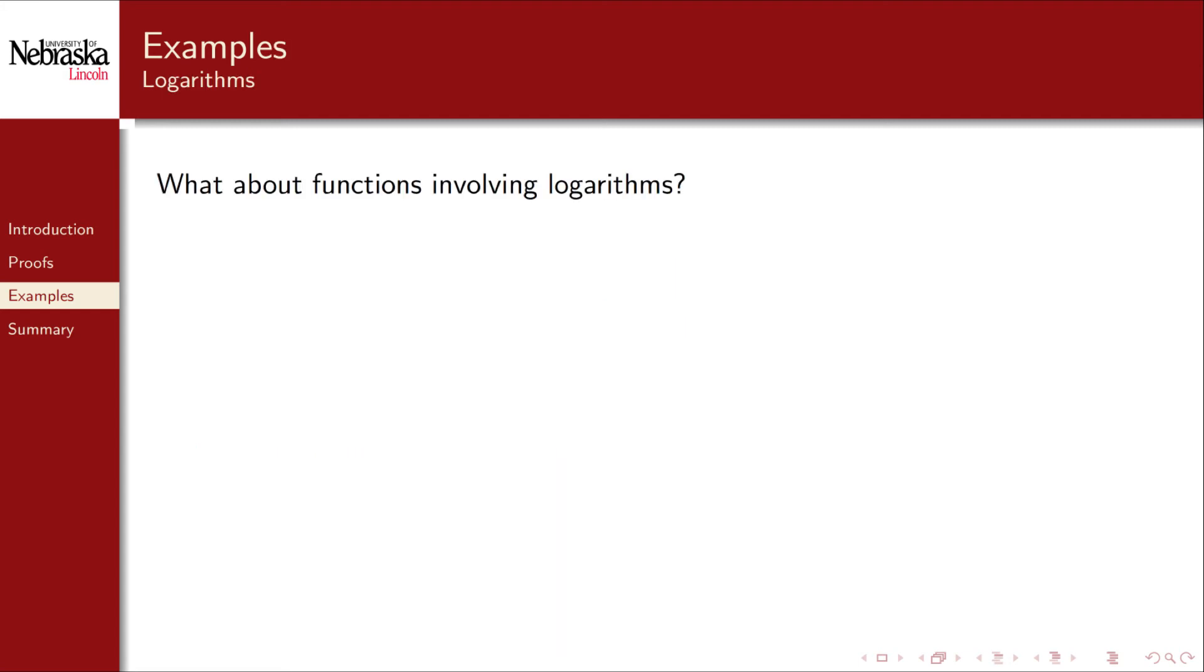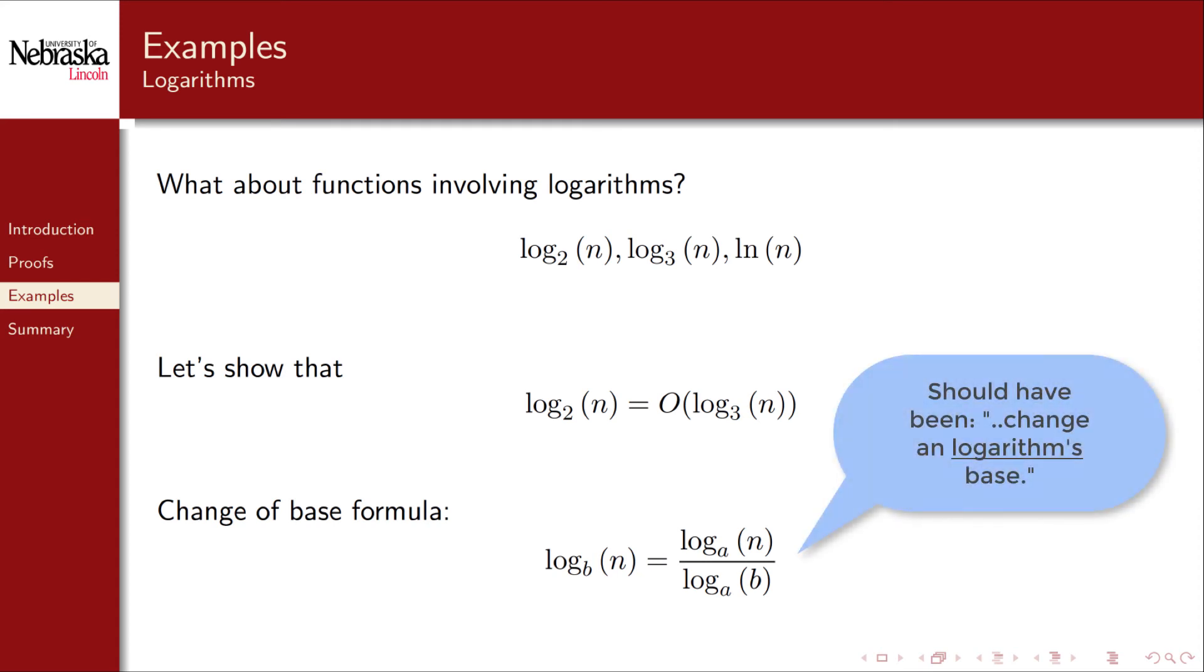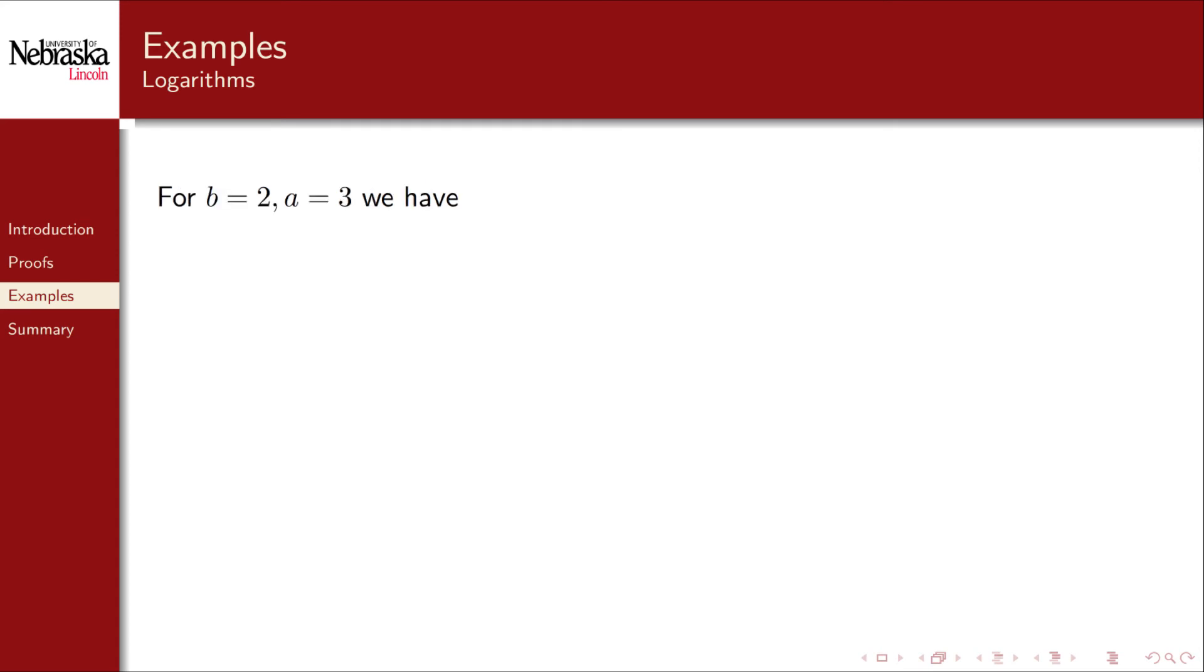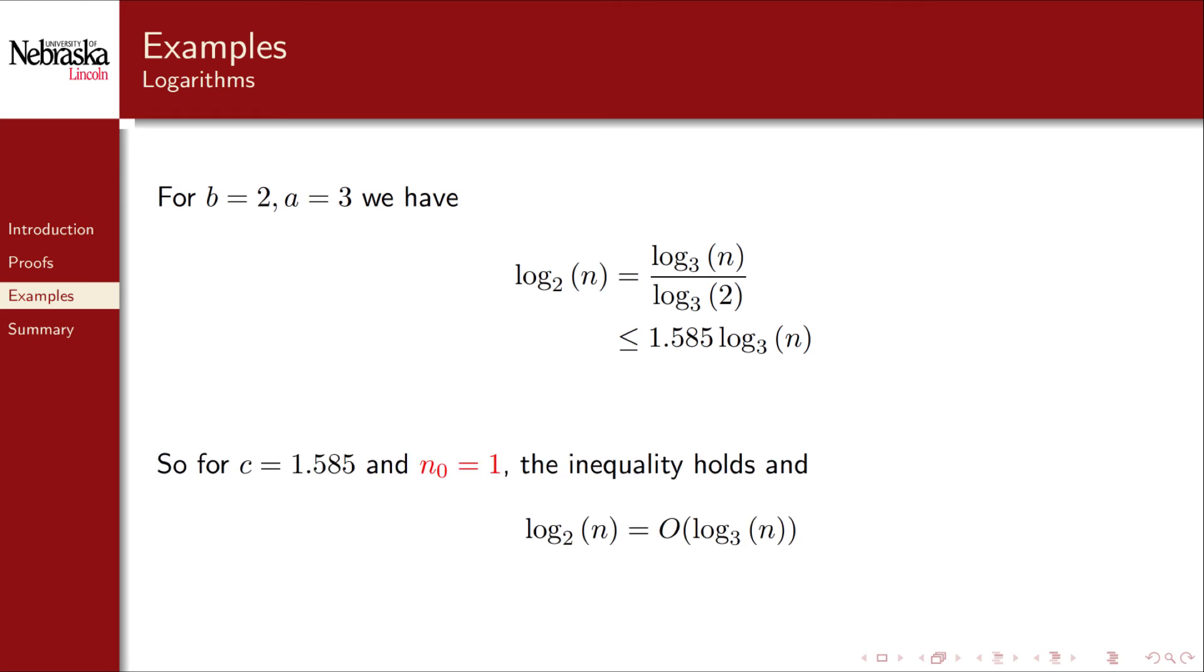What about functions involving logarithms such as base 2 or base 3 or the natural log? As an example, we'll show that log base 2 is big O of log base 3. To do so, we simply apply the change of base formula that allows you to change any algorithm's base. For b equals 2 and a equals 3, we get that log base 2 of n is equal to log base 3 of n divided by a constant. Evaluating that constant gives us an inequality that conforms to the definition of big O. Thus, for c being 1.585 and n naught being 1, the inequality holds and we've proven that log base 2 is big O of log base 3 of n.